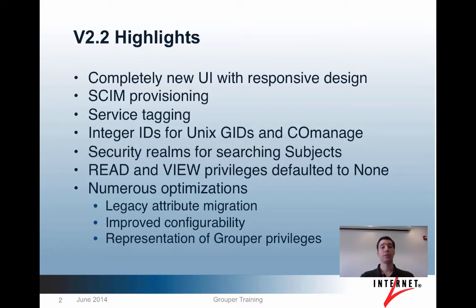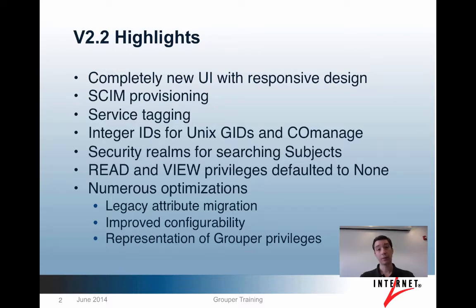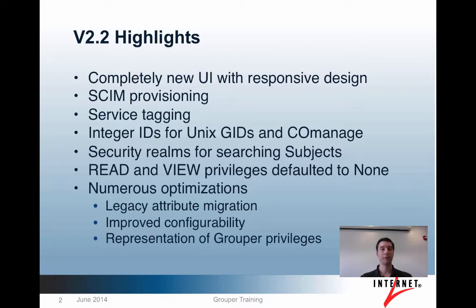Some of the highlights include a completely new UI with responsive design, SCIM provisioning, service tagging, assignment of integer IDs on all objects to assist with Unix GID as well as co-manage, security realms for searching subjects, a new security privilege for read and view, defaulting now to none, numerous optimizations including work on legacy attribute migration, improved configurability, and representation of grouper privileges.